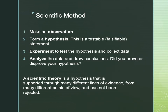The last thing we'll talk about is the scientific method. First, you make an observation, then you form a hypothesis — a testable statement. Then you experiment and test the hypothesis, collect data, analyze your data, and draw a conclusion: did you prove or disprove your hypothesis? It really doesn't matter if you're right or wrong — what's important is that you collect and analyze the data appropriately. You can always make a new hypothesis, and that's the idea of this cyclic nature of the scientific method — running through again and again to narrow in on your question.